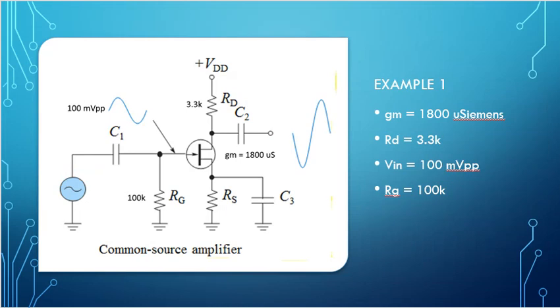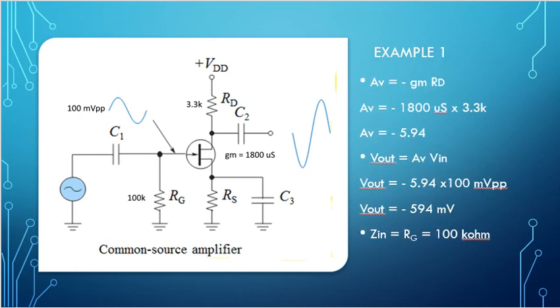The gain equals negative conductance times the drain resistor. This resistor and the conductance of this JFET determine the output gain. AV is our voltage gain. Let's do an example. In this example, we have a JFET with a conductance of 1800 microsiemens, a drain resistor of 3.3K, an input signal of 100 millivolts peak to peak, and a gate resistor of 100K. First thing we do is use our gain calculation: AV equals minus the conductance times the drain resistor. We get minus 1800 microsiemens times 3.3K, which equals minus 5.94.